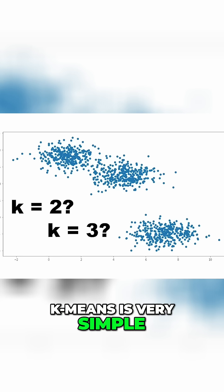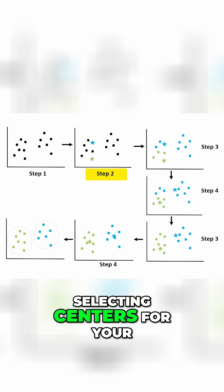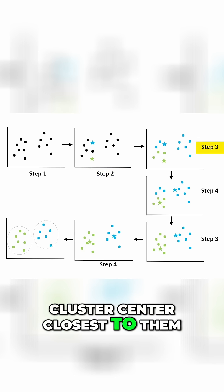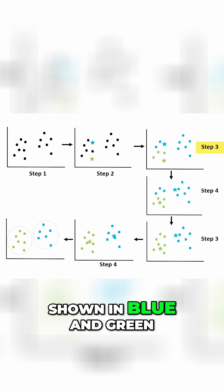k-means is very simple. You start by randomly selecting centers for your k clusters and assigning all data points to the cluster center closest to them. The clusters here are shown in blue and green.